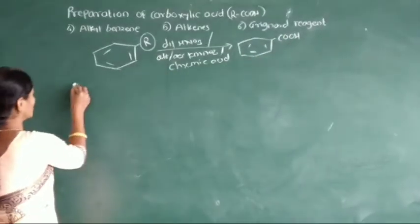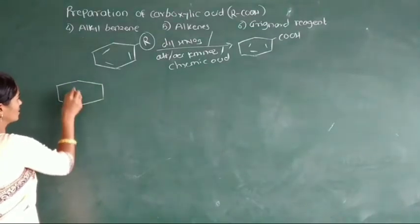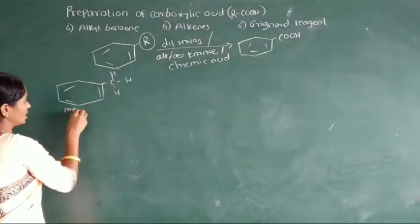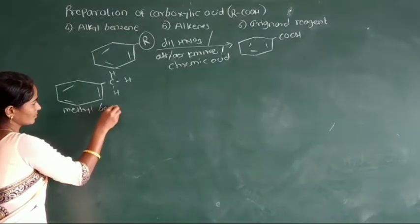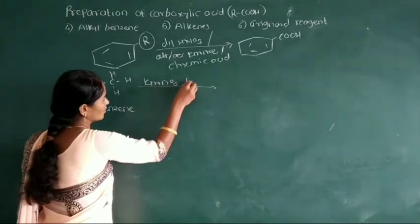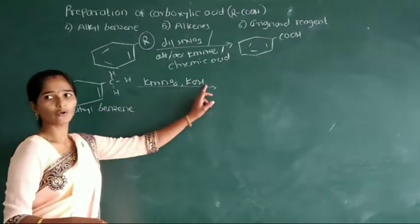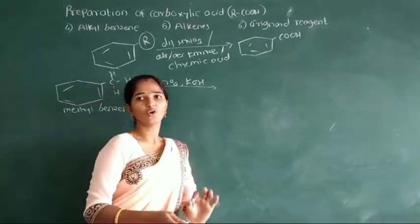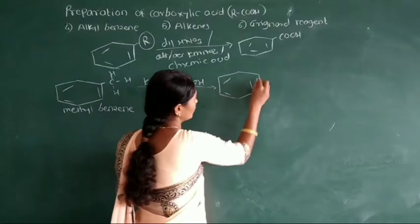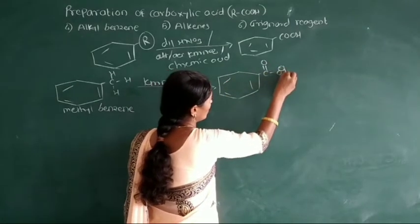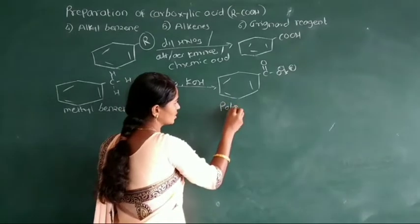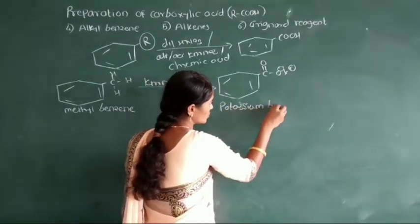We see some examples. First we take ethylbenzene — it is called as N-ethyl benzene. This N-ethyl benzene reacts with the oxidizing agent in the presence of potassium hydroxide, and here there is formation of potassium salt of carboxylic acid, that means formation of COO⁻K⁺, the potassium salt of acid.